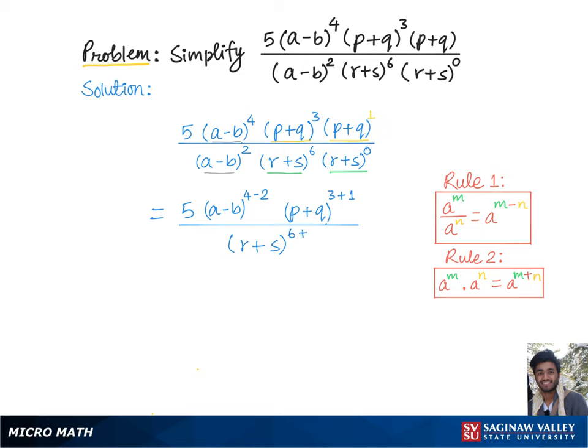This is equal to 5 times a minus b to the 2nd power times p plus q to the 4th power over r plus s to the 6th power, which is the final answer.